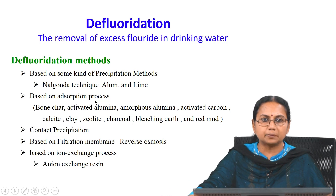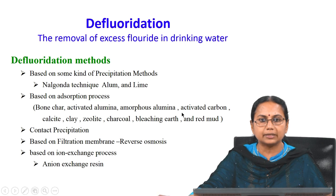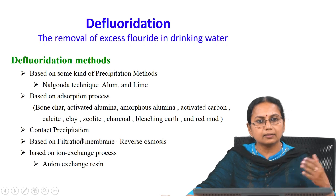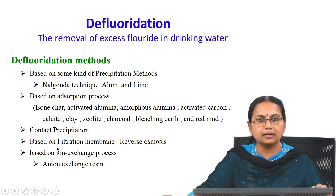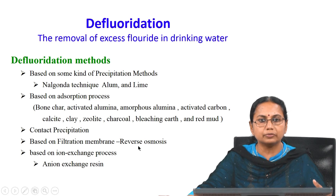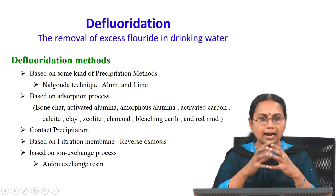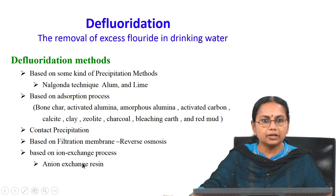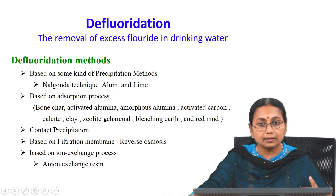Another method is adsorption, using adsorbents like bone char, activated alumina, amorphous alumina, activated carbon, calcite, clay, zeolite, charcoal, bleaching earth, and red mud. There is also contact precipitation and improved precipitation methods, membrane processes such as reverse osmosis, and ion exchange using anion exchange resins where fluoride is exchanged with other anions. Most of these methods can also be used for arsenic removal.